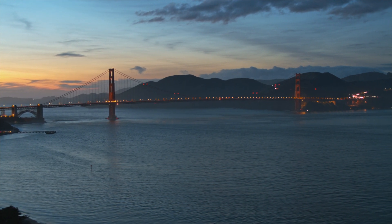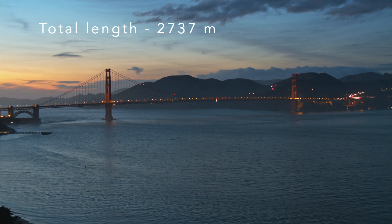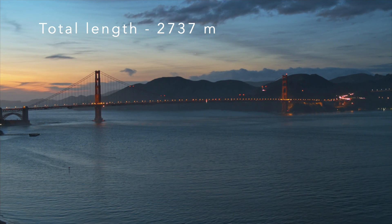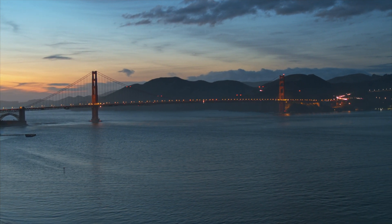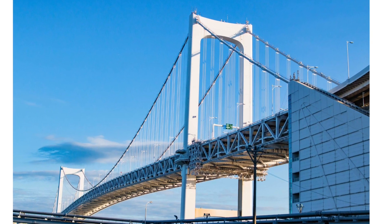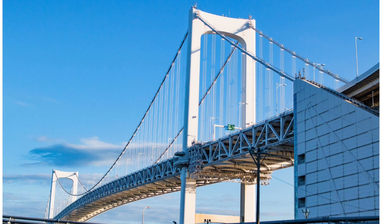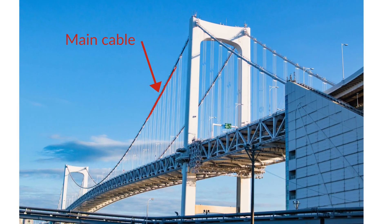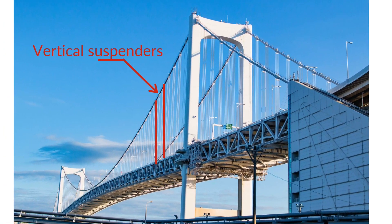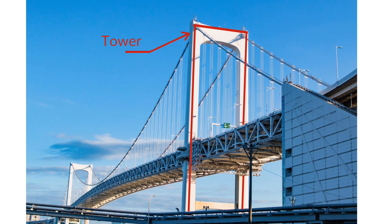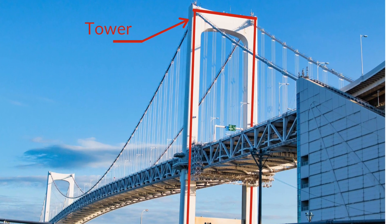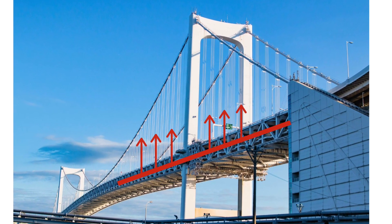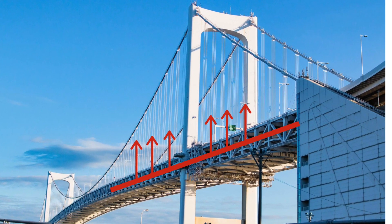The Golden Gate Bridge in the US is another famous suspension bridge, with a central span of 1280 meters and a total length of 2737 meters. The main components of a suspension bridge include the deck, the main cables, the vertical suspenders, and towers.